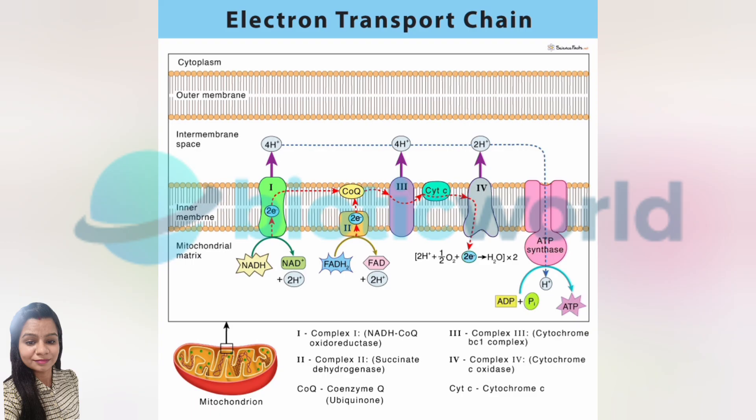Meanwhile, FADH2 donates electrons to Complex 2, known as succinate dehydrogenase, which also passes electrons to coenzyme Q but does not pump protons. COQH2 then carries the electrons to Complex 3, also known as cytochrome BC1.